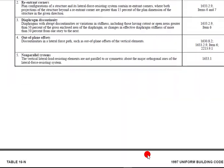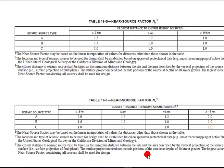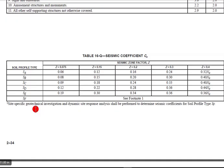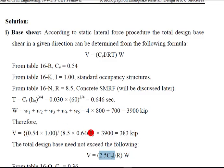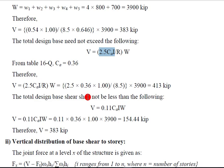So all the values are given. First we find the CA value from UBC 97. We can find the CA value: our soil type is HD soil and the zone is 0.3, so we take the value of CA as 0.36. So here the CA value is 0.36.